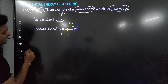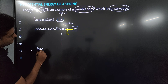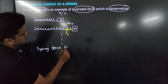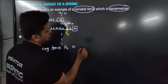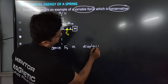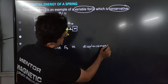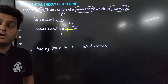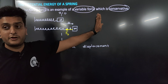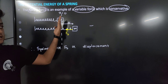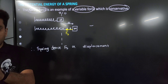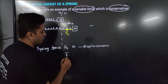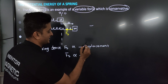So we can say that the spring force Fs is directly proportional to displacement — displacement means elongation or compression. And is it in the same direction as displacement or opposite? Opposite. If you displace in one direction, the restoring force acts in the opposite direction. So the sign is negative: spring force is directly proportional to minus x.